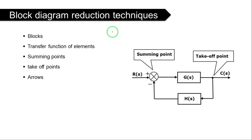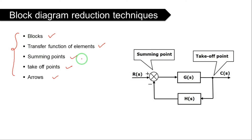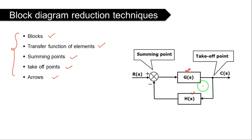In control system theory, you have to know some rules of block diagram reduction. First of all, a block diagram consists of some components: blocks, transfer function of elements, summing points, takeoff points, and arrows. G(s) is a block and H(s) is a block. The transfer function of elements — G(s) is the transfer function of one element, which may be an inductor, capacitor, or anything. H(s) is a transfer function of a feedback element.